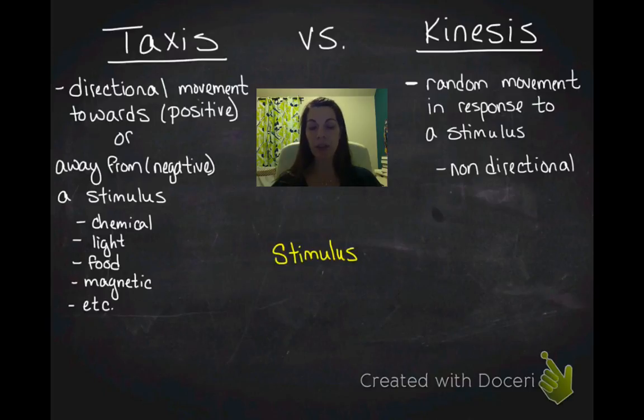Let's look at an example. We'll have a stimulus here with a gradient, so we're going to have high stimulus at one side of the gradient and low at the other. Basically, the closer you are to the stimulus, the more of the stimulus you're sensing. In this case, a good example would be a chemical stimulus.